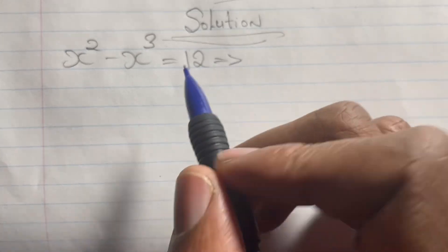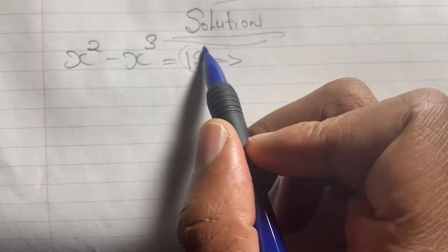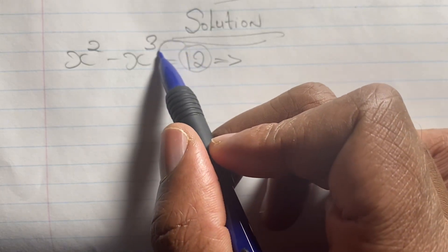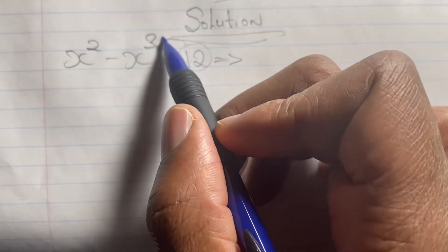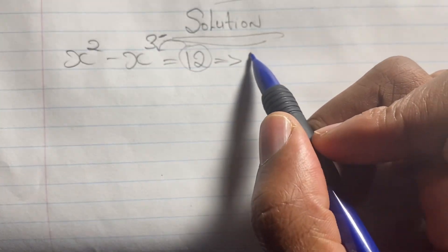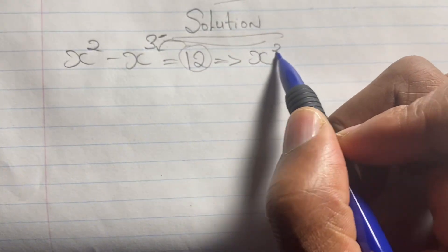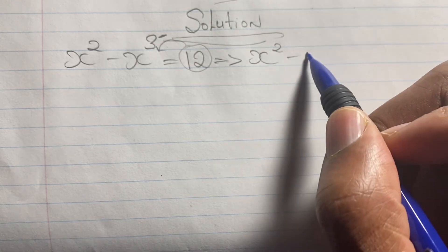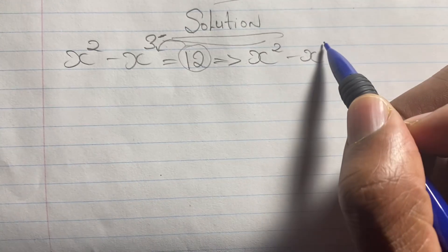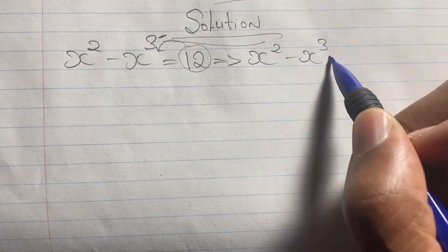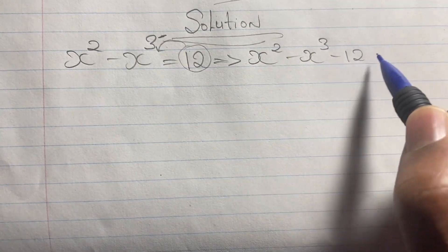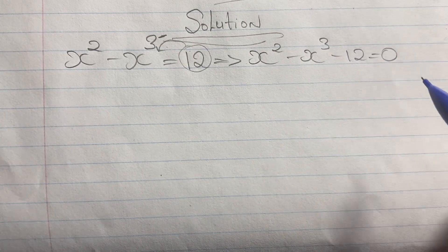We start solving our equation by taking 12 and bringing it to the left-hand side, where it becomes negative. So we rewrite our equation as x squared minus x cubed minus 12 equals 0.